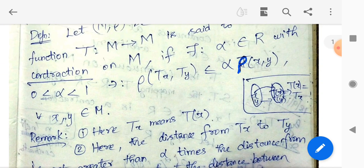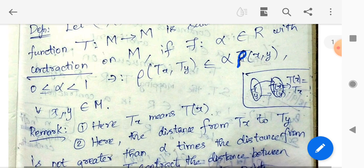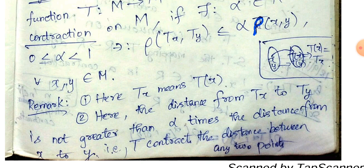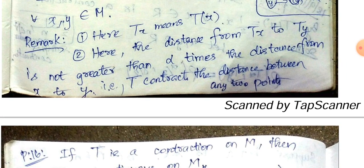If you apply ρ(Tx, Ty), the value on the left-hand side is less than the right-hand side, which is α · ρ(x, y). The contraction reduces the value — the right-hand side is reduced. That is the name: contraction. That is the meaning.